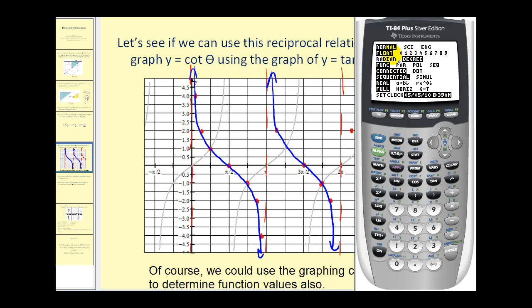My calculator is in degree mode. For y one, I typed one over tangent x, since there's no cotangent key. Just to compare, in y two, I entered tangent x. Y one will be our cotangent function, and y two will be the tangent function. I'm going to press second graph. Notice that at zero degrees, there's an error for cotangent, meaning there's a vertical asymptote. Tangent was zero.